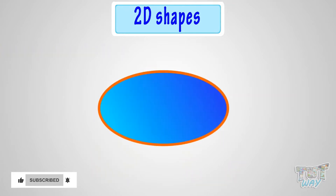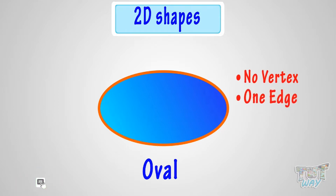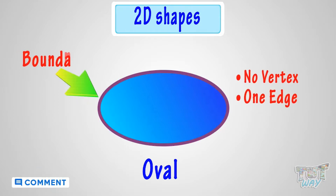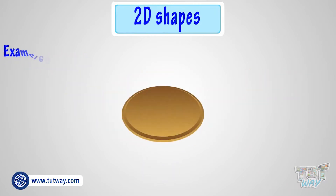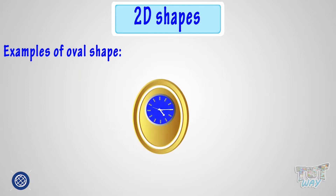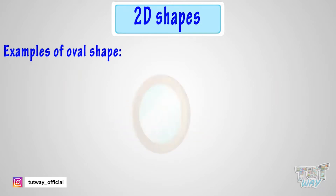This shape is called an oval. It, too, has no vertex. It just has a boundary which is its single edge. These are various things that are oval in shape.